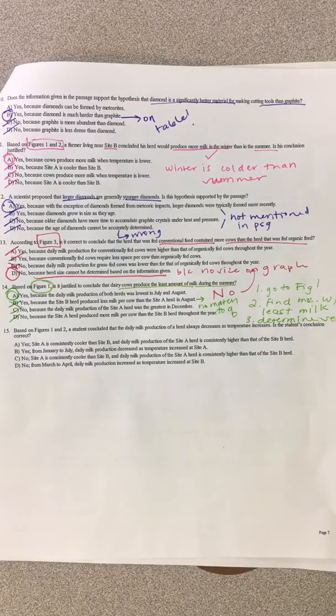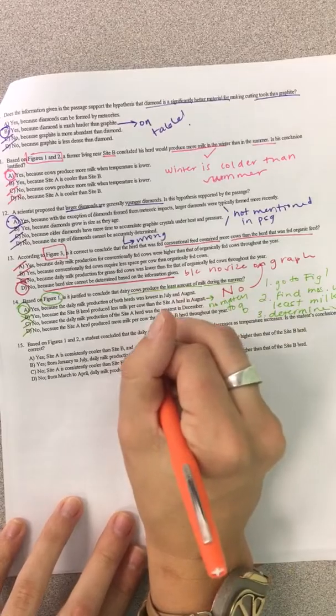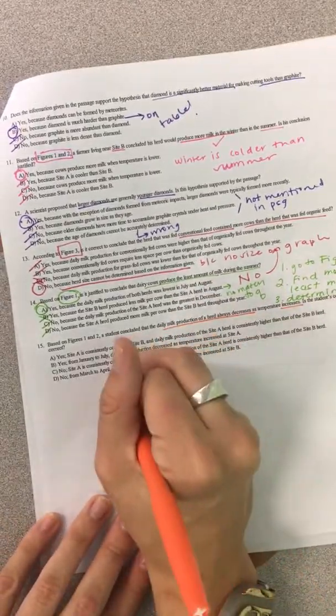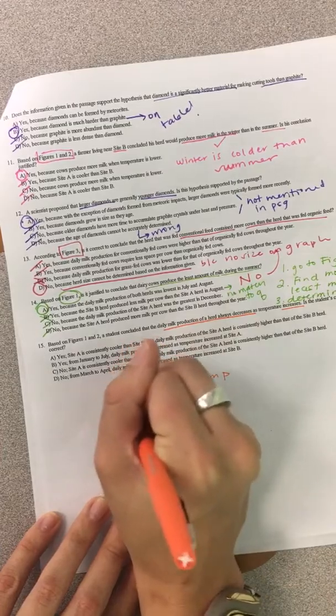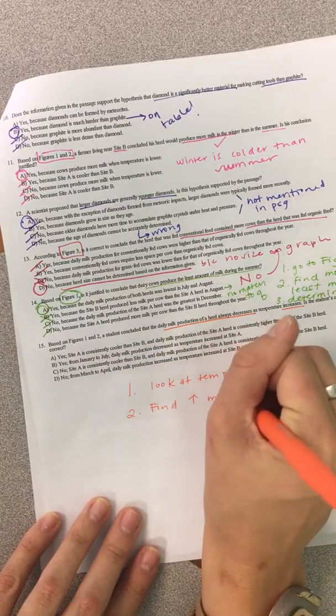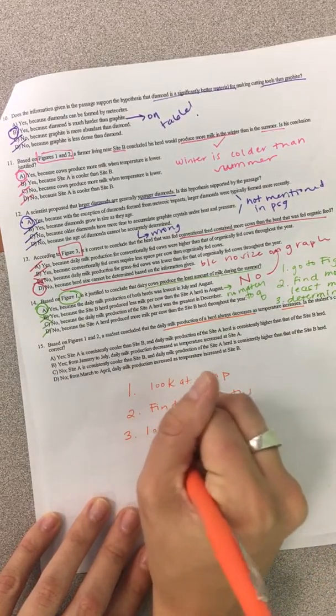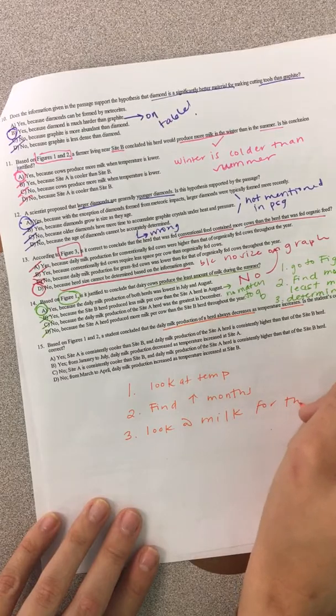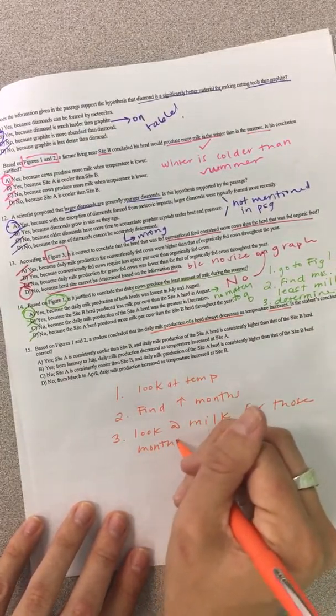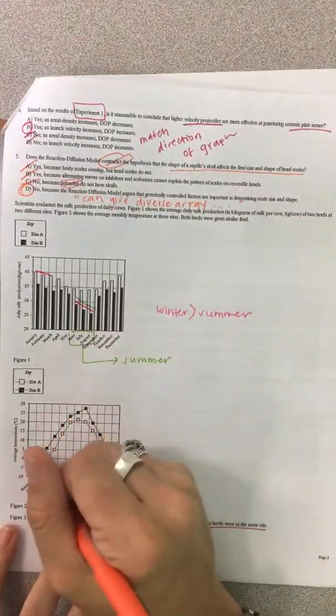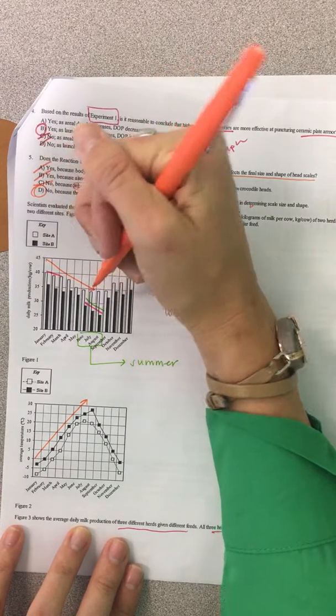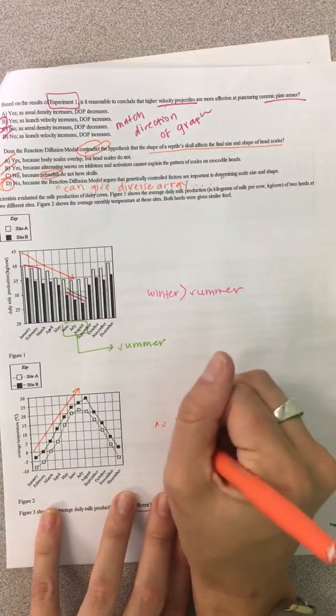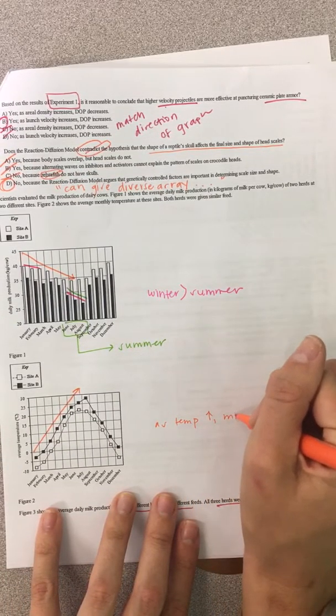Alright, 15. Based on figures 1 and 2, a student concluded that the daily milk production of a herd always decreases as temperature increases. So, look at temp, find the highest months, and then look at milk for those months. Okay, so figure 1 and 2. So, as the temperature increases this way, what is the milk production doing? And it's decreasing. So, as temperature increases, milk decreases.